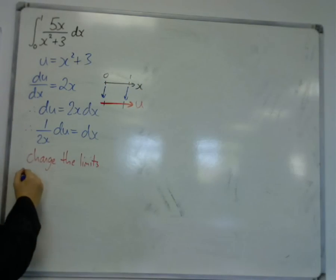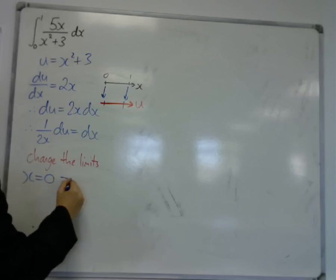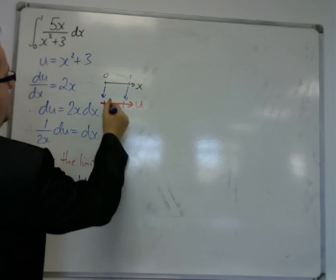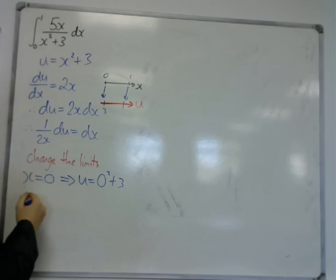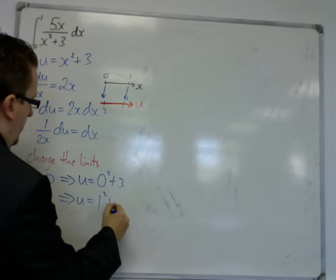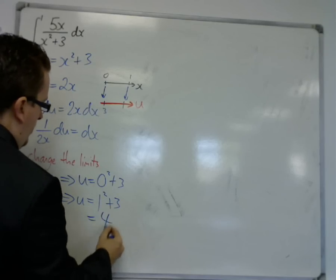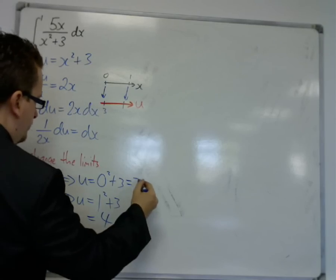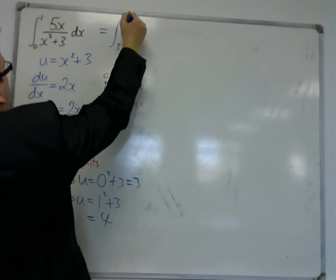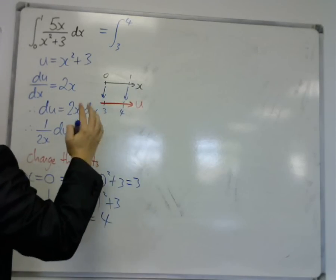So we've currently got an x-axis between 0 and 1. And we want a u-axis. So when x is 0, u is equal to 0 squared plus 3, so 3. And when x is 1, u is equal to 1 squared plus 3, which is 4. So we're now integrating between 3 and 4, not 0 and 1.